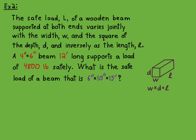So don't forget the k. K times jointly with width, k times w, and it varies jointly with the width and the square of the depth, so L equals kwd squared. And then inversely, that's the thing you're dividing by, the length little l. So I just wrote that down.